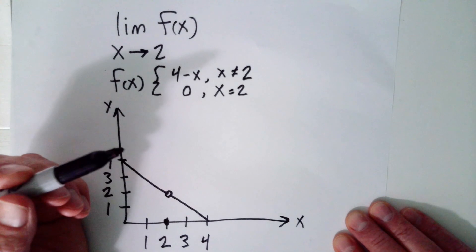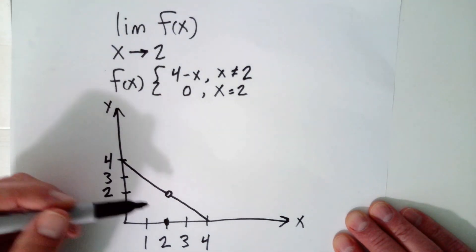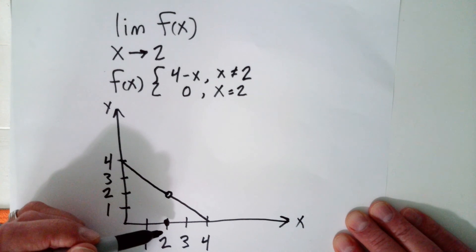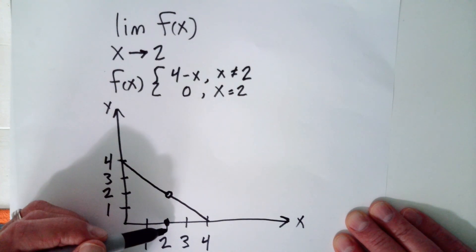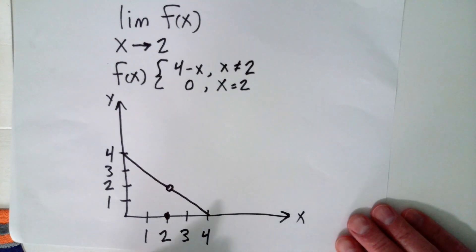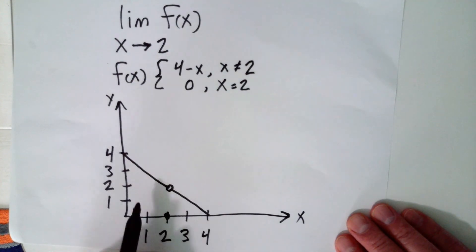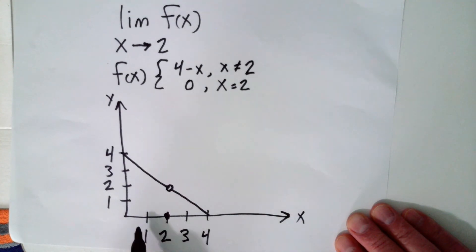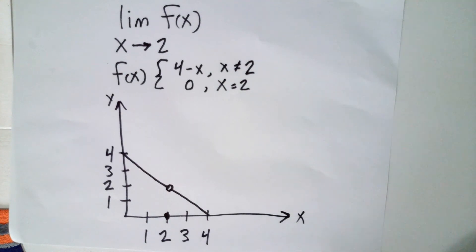This is a little bit strange because the limit exists and it's 2, but the value of the function at 2 is 0. The main point is that you just look at what the value of the function is when you get close to 2 — not at 2, but close to 2 from the left and from the right. Hope that helped. Thank you.